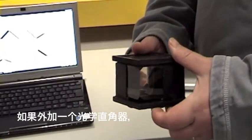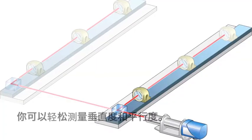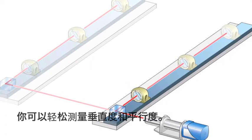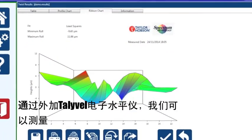With the addition of an optical square you can measure squareness and also parallelism. With the addition of the Tallyvell electronic level we can also measure twist or roll.